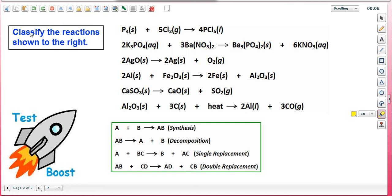We're asked to classify the six reactions shown here to the right, and to do this we can use the four basic reaction types to classify the reactions above. These reaction types are synthesis, decomposition, single replacement, and double replacement.